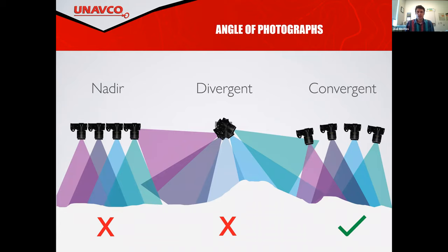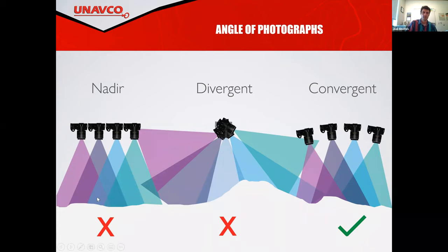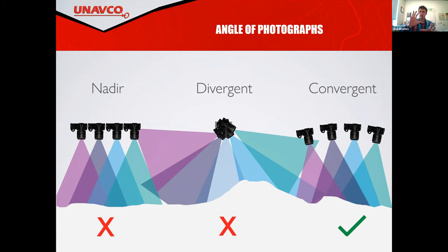There are different approaches to taking photographs for structure from motion. One term is nadir, which means you're basically perpendicular — looking straight down at the surface of the earth. That is good if you want to do an aerial photo mosaic, but not good for structure from motion because you're not getting different angles of the same features to capture three-dimensional properties. Divergence is also problematic — that simply means you're looking away and not surrounding a feature. Convergence is what we're looking for: for a building or a ridge, you want to take everything focused around that feature so you can get all sides of it.